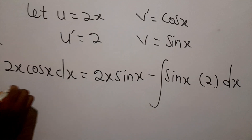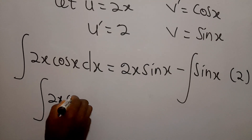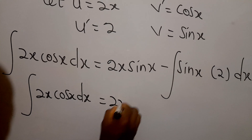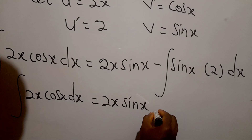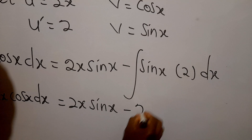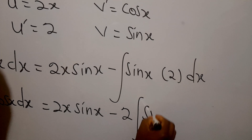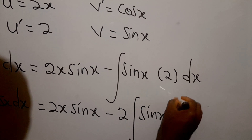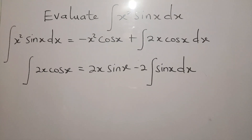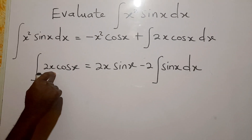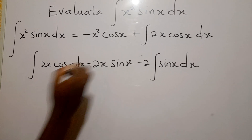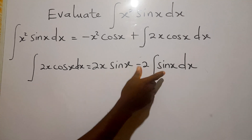So we can say the integral of 2x cos x dx is equal to 2x sine x, then minus — since 2 is a constant I can bring it out — minus 2 times the integral of sine x dx.